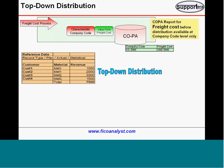Now let us say the reference data is like this: you have revenue — customer 1 with material 1: 1000; customer 2 with material 1: 2000; customer 3 with material 1: 3000; customer 4 with material 2: 1500 — total 7500. This reference data may be any record type: plan, actual, or statistical — that is exactly what flexible reference means. You can take any of these as reference data.